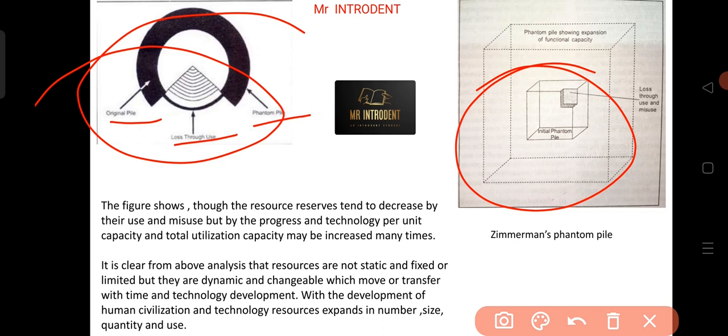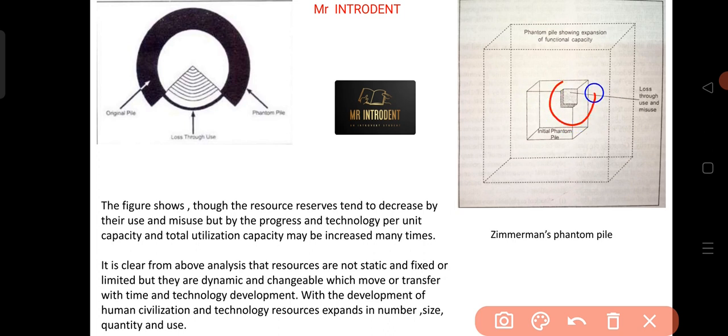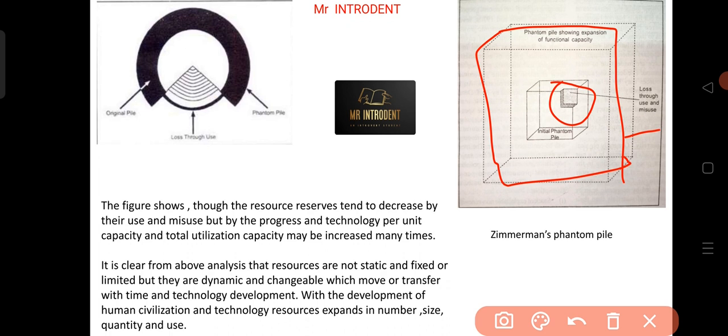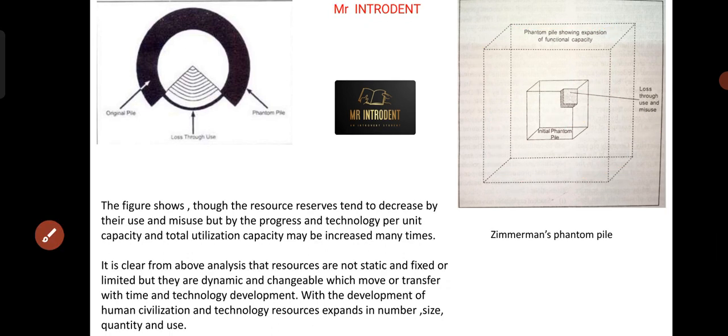We see that there is the original pile, then original pile is reducing because of its use and misuse, then there is a phantom pile. Similarly in this figure, we see there is an initial pile, initial phantom pile, and some part of it is reducing because of misuse and use. This is a larger picture—we see a larger cube here. It says that there is a phantom pile which is showing the expansion of functional capacity.